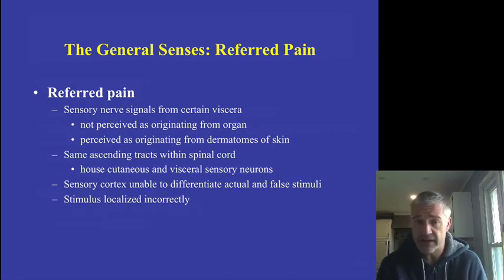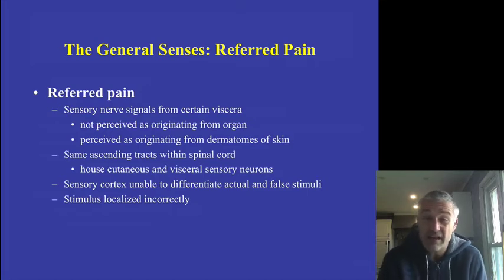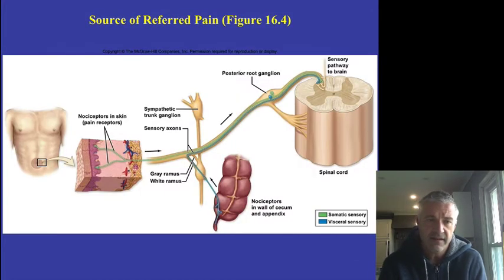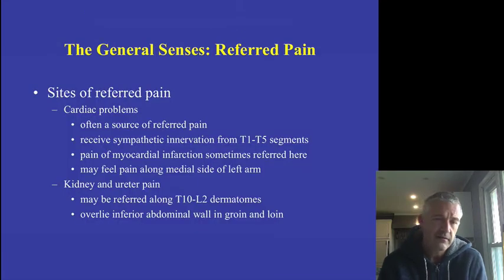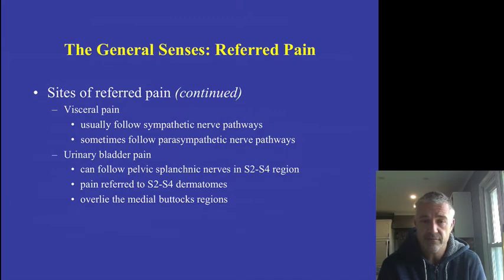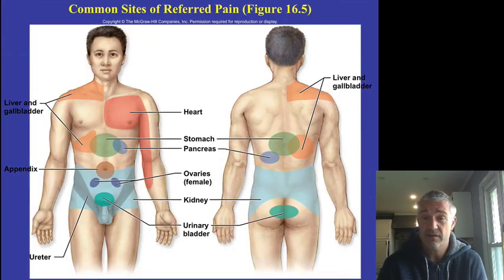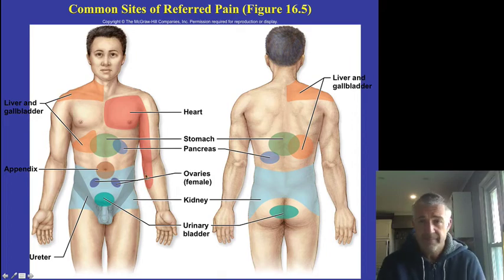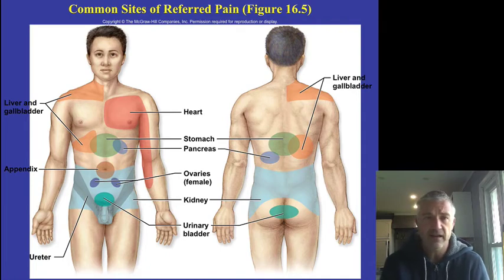Sometimes you experience referred pain, especially with visceral pain. Certain sensory signals from internal organs are perceived as coming from somewhere else — often the skin — because visceral and cutaneous nerve tracts run very close together, causing cross-signaling. For example, heart pain is often felt in the left shoulder and arm; kidney and ureter pain is felt in the groin; and liver or gallbladder pain may be felt in the right shoulder.